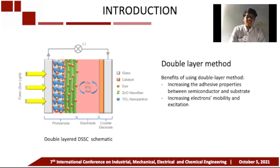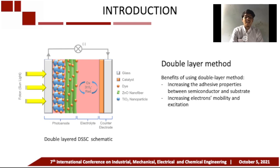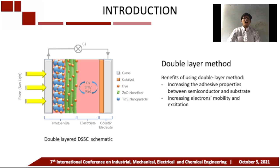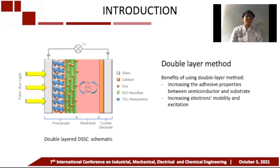Among the three generations of solar cells developed by scientists, the last generation is the dye-sensitized solar cell (DSSC), discovered by Michael Grätzel in 1991. The DSSC is interesting to research because of its convenience and low cost in fabrication. The use of double-layer photoanodes using titanium dioxide nanoparticles and zinc oxide nanofibers in the DSSC is arranged to form a sandwich structure to strengthen the semiconductor bond with the substrate and increase adhesive properties.